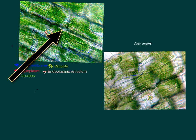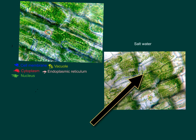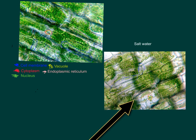We have the endoplasmic reticulum. This is a folded membrane that forms a network of canals. Substances travel down these canals to the various parts of the cell or to leave the cell. The reticulum plays an important role in cellular transport.